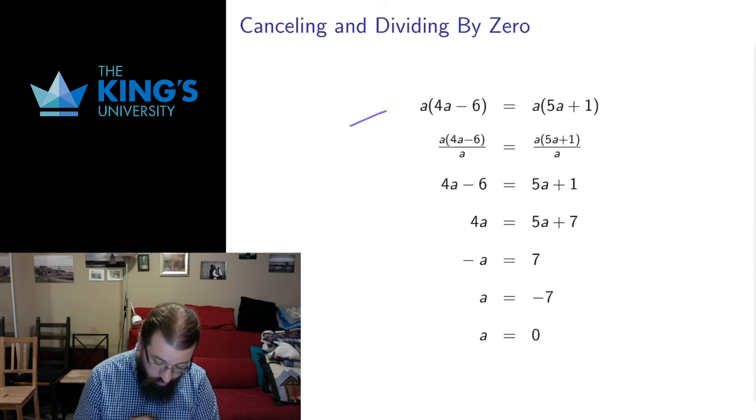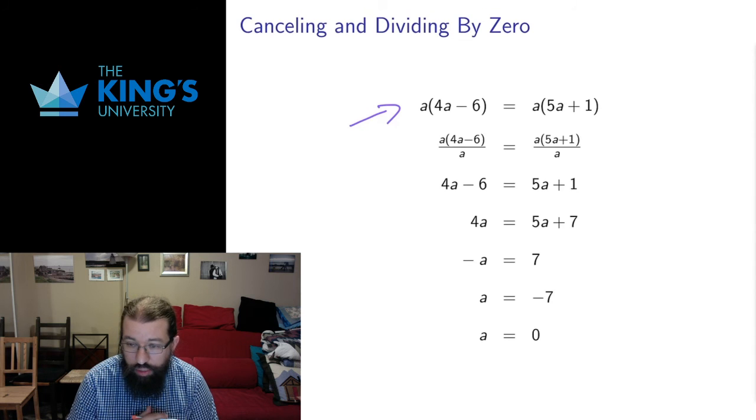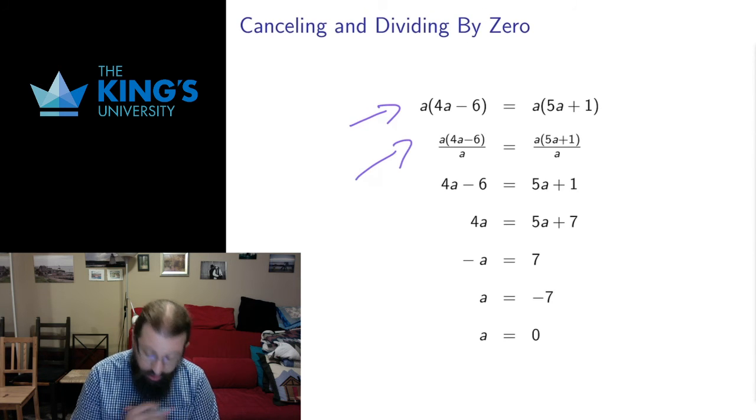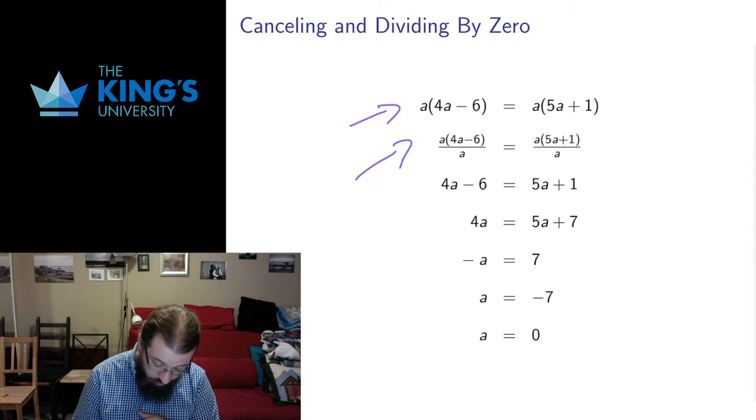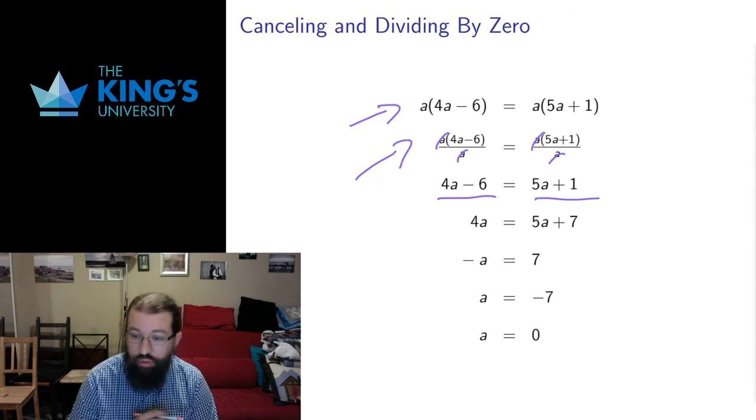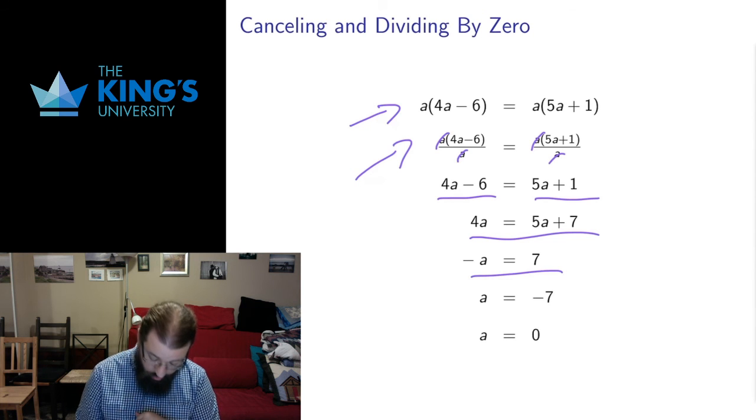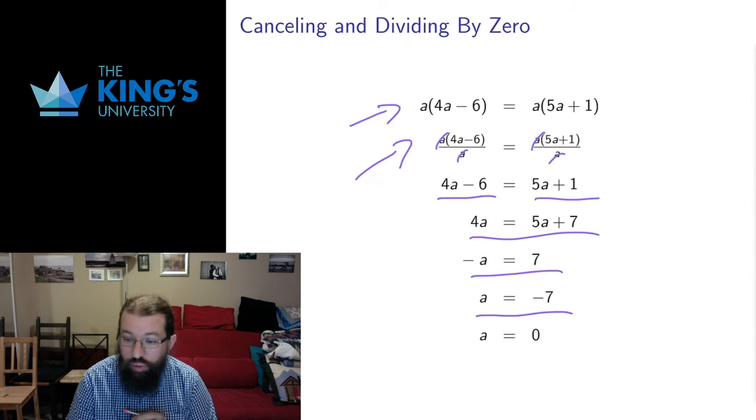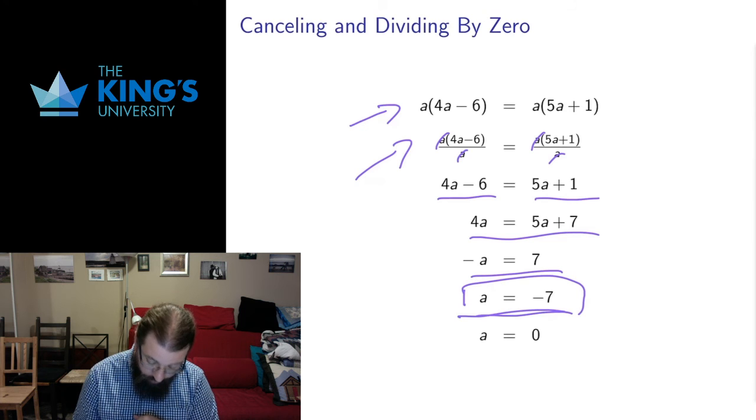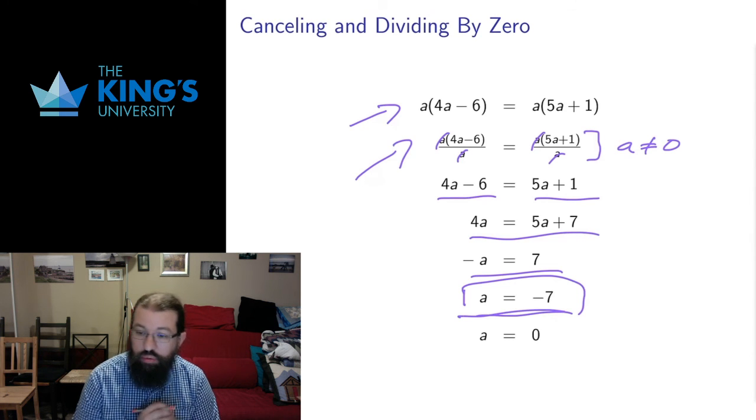Consider this equation where a is our unknown. Both sides of the equation are multiplied by a. So I can divide both sides by a, and that cancels the a's off and leaves me with a simpler equation. Then I add 6 to both sides, subtract 5a from both sides, multiply both sides by negative 1, and I get that a equals negative 7. But back up in this step. This step only works if a is not equal to 0.